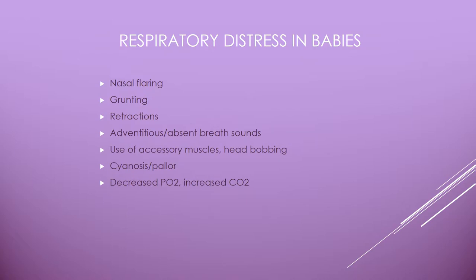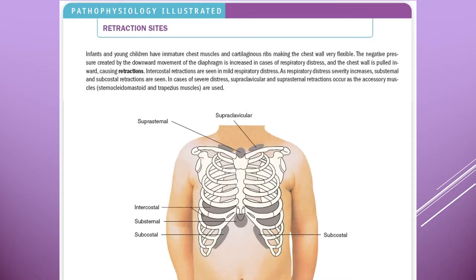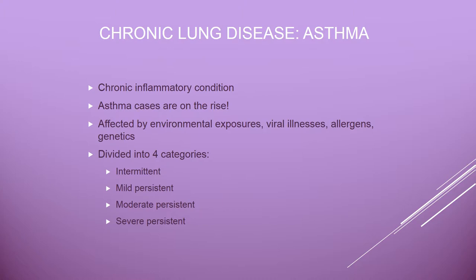This slide goes over what to look for with respiratory distress in babies. This graphic shows where to look for retractions — they can be supraclavicular, substernal, or intercostal. Intercostal retractions are seen a lot, as are subcostal retractions.